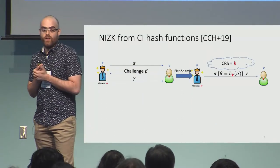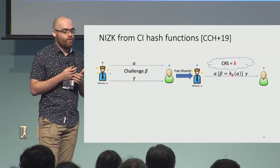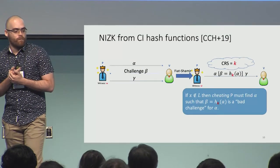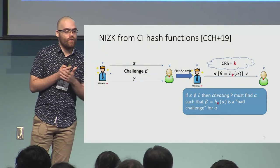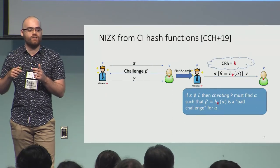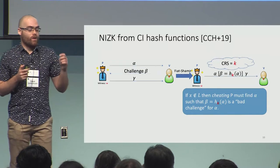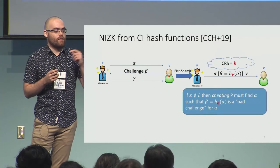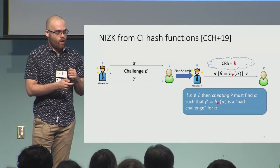CCH+19 instantiates the Fiat-Shamir transform with a CI hash function for circuits. It puts the key of the CI hash function in the CRS. A cheating prover, in order to prove a wrong statement — prove that x is in L when it is not — must find an alpha such that the hash of alpha is a bad challenge. A bad challenge is one of the rare challenges which allow the prover to complete his proof; it is rare because the underlying protocol has soundness, so only a negligible fraction of challenges let the prover complete a wrong proof.